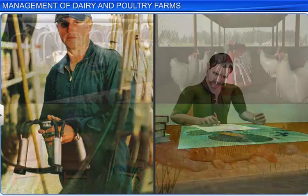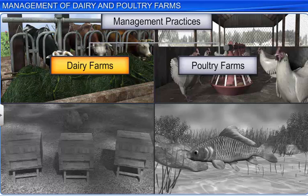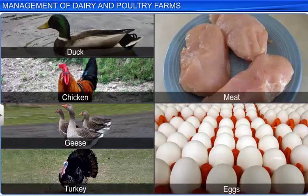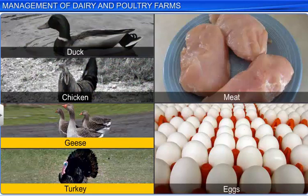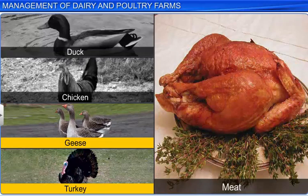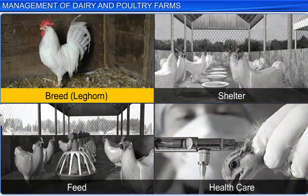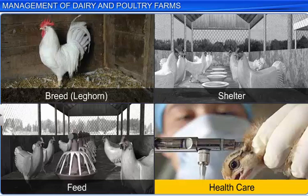Just as dairy farms are used to rear milk yielding animals, poultry farms are managed to raise domestic fowls or birds such as chicken, duck, turkey and geese. These birds are reared for their meat and eggs. Poultry refers to the meat of these birds and is sometimes used to denote the meat of all kinds of birds. Poultry farms also employ the management practices of dairy farming such as proper breed selection, shelter, feed and healthcare.